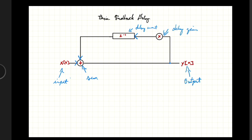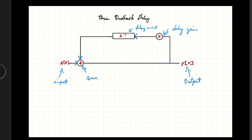On the left-hand side we have X(n) — X just means the input signal, and N means where in the input signal we're at, essentially the position in the array. Y(n) is the output — the signal we actually hear coming out of the speakers. If we only had X(n) going straight to Y(n), that would just mean input signal going to output signal with nothing being done to it.